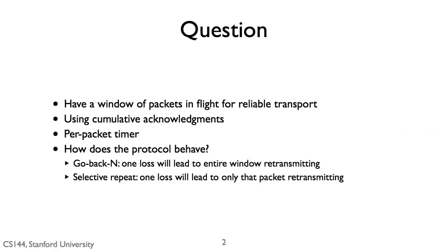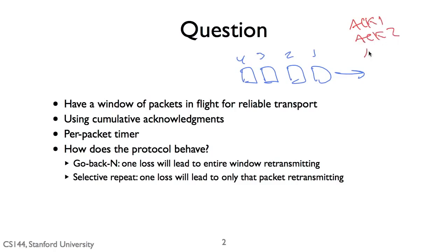The basic question is: with some sliding window reliable transport, we have a window of packets that are in flight. We're using cumulative acknowledgements, so all we get back is something like ACK one, ACK two, ACK three, ACK four — just the last packet that was successfully received. We're maintaining a retransmission timer for each of these packets based on when they were sent, essentially maintaining a conservative estimate of: if we haven't received an acknowledgement for the packet by this time, then it is almost certain that the packet was lost and we should retransmit it. So the question is, given this set of parameters generally used for reliable transport, how is the protocol going to behave? What is its retransmission strategy going to look like?